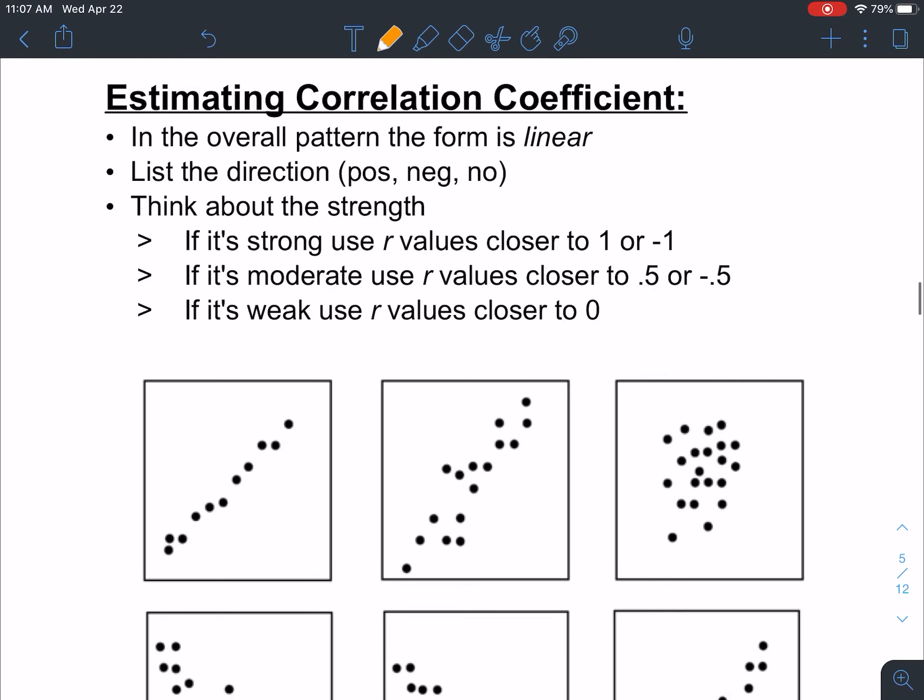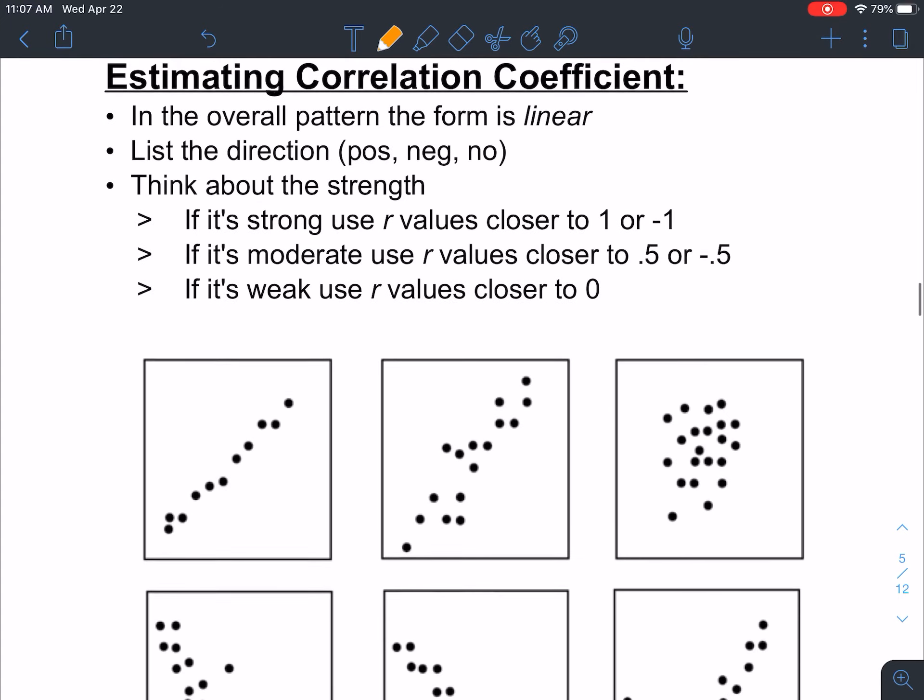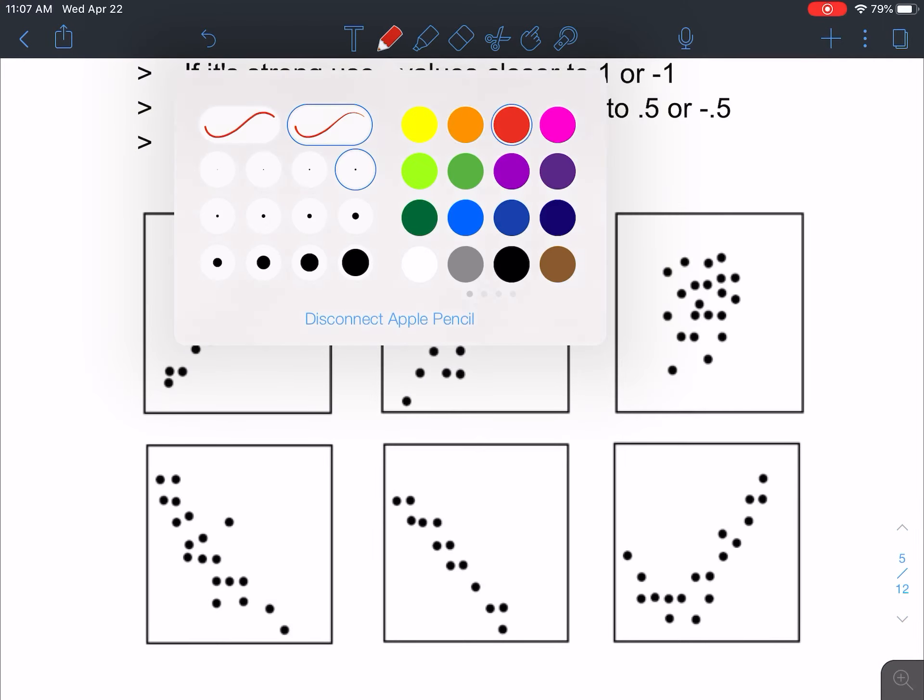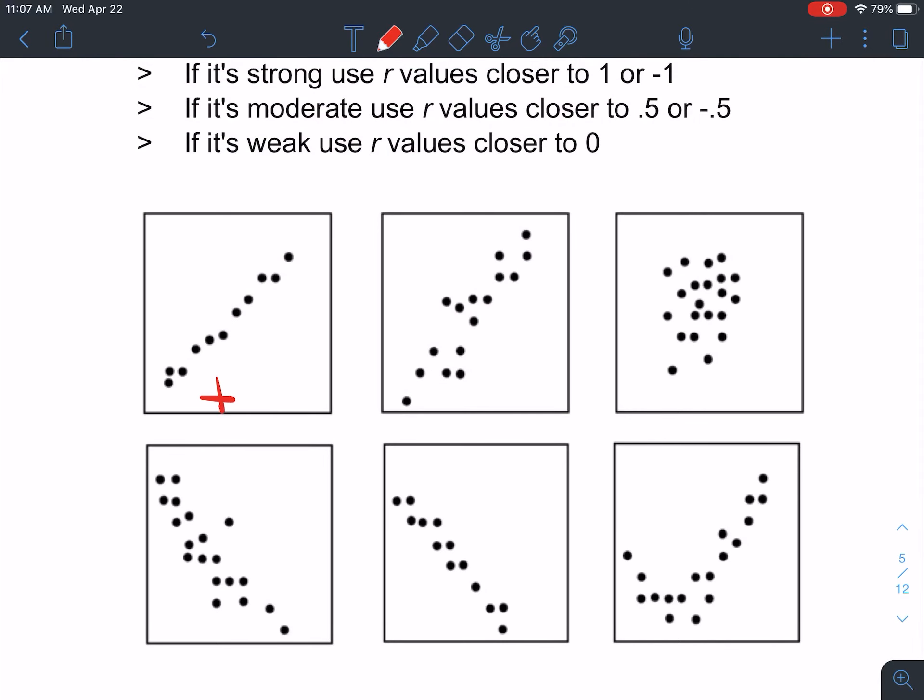So looking here, we have some examples. Most of the time, these are going to be questions like multiple choice questions, but in this case, we're just going to roughly guess what they might be. So we're going to give it an R value. First thing you should always look for is, is it positive, negative, or no correlation? So I'm going to go through each one right now and just do that. If we look at this one, positive, positive. This one may be positive, but the points are kind of all over, so I might even just say no. This one, negative, negative, and this one mostly positive.